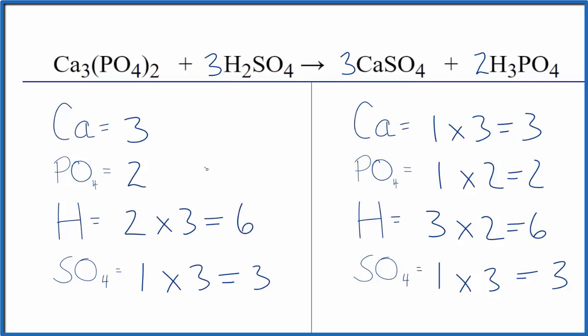So it looks like a pretty intimidating equation to balance when you start out. But if you think of the polyatomic ions, like the phosphate ion here, we have it again here. We can just count it as one thing. Same for the sulfate. We have the sulfate here and here. We can just count that as one thing. Then when we do the balancing, it's a lot easier.